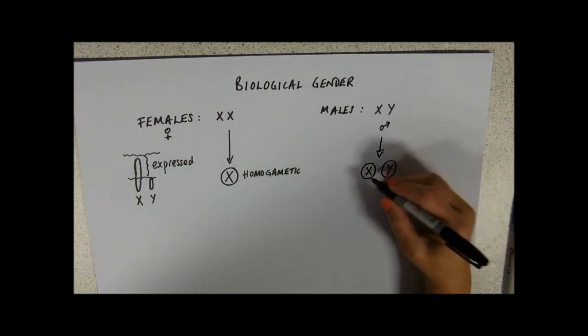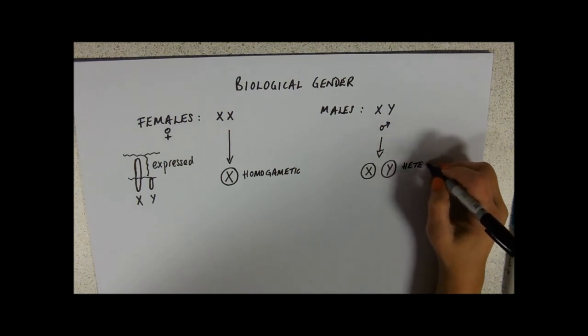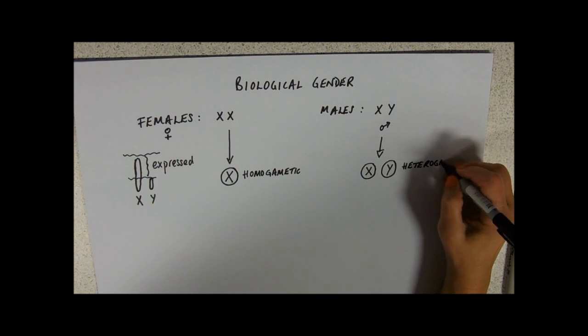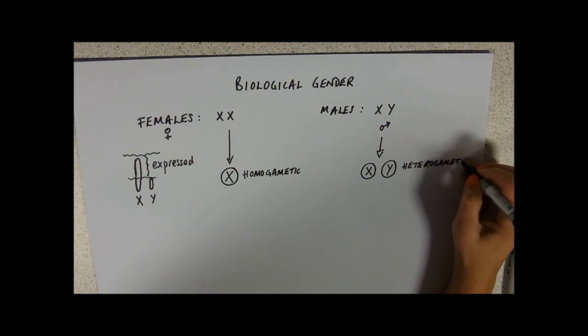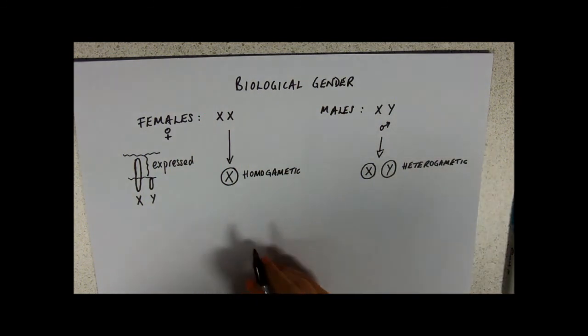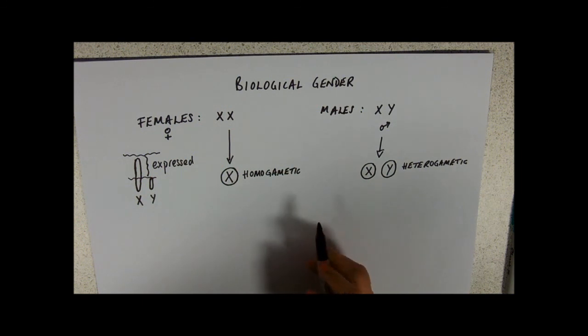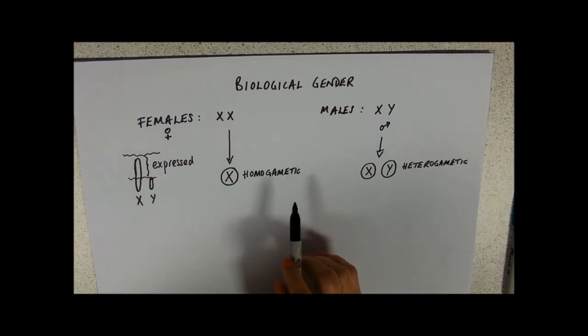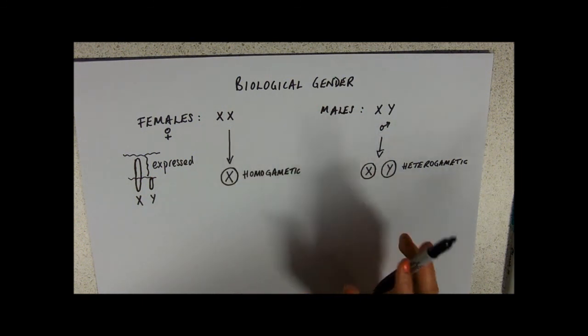And males of course are producing two different ones and they are called the heterogametic sex. Now, in most things this is the case that females are XX and males are XY.